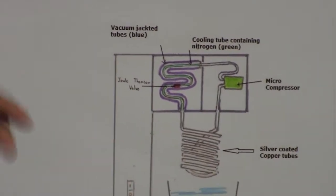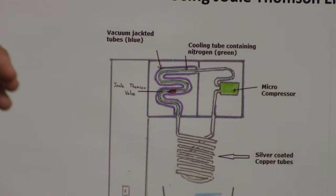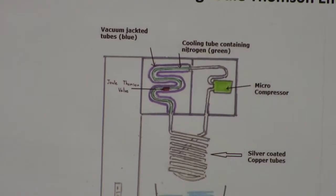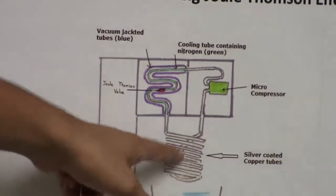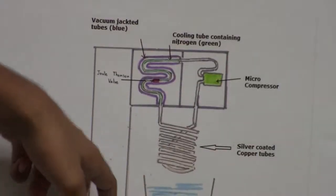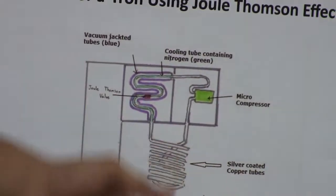The gas, when pressurized through the JT valve, expands rapidly on the other side and cools down. Then when this coolant is passed through the coolant tubes, the coolant tubes cool down. And when the coolant tubes are immersed in the beverage, the beverage cools down.